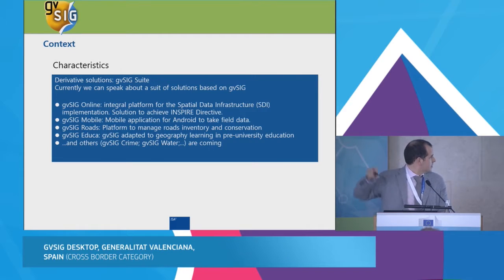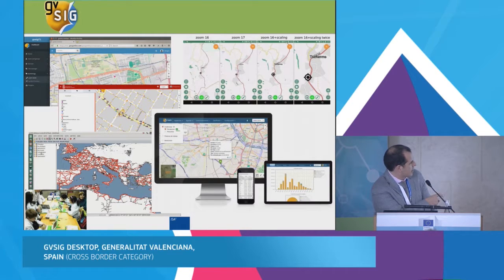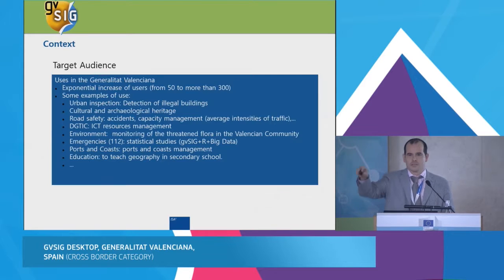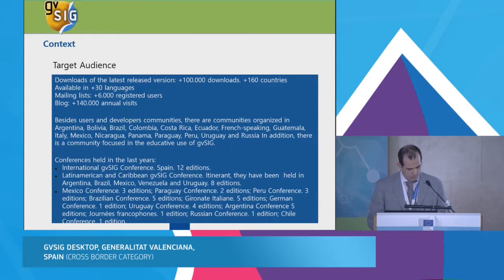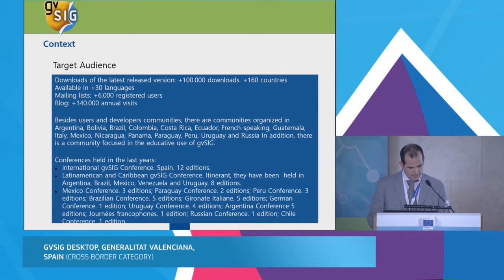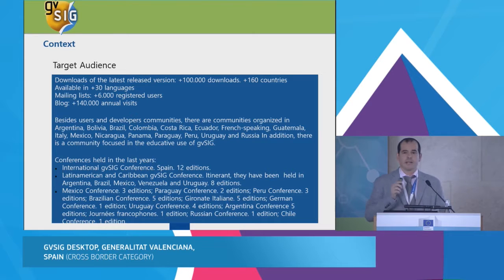In this image, you can see GVSIG Online in the upper left corner, GVSIG Mobile in the upper right corner, GVSIG Roads in the lower right corner, and GVSIG EDUCA with students in the lower left corner. Some information about target audience: more than 100,000 downloads of the latest version in more than 160 countries. Available in more than 30 languages. More than 6,000 users in the GVSIG mailing lists. More than 140,000 annual visits to the GVSIG blog. We have 16 GVSIG organized communities and more than 50 conferences in 13 different countries. All the conferences are free.